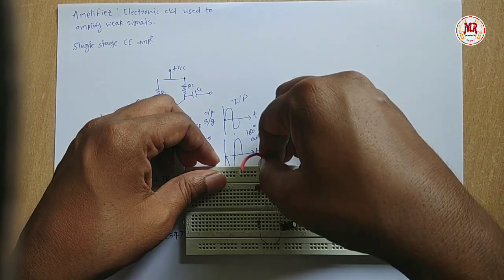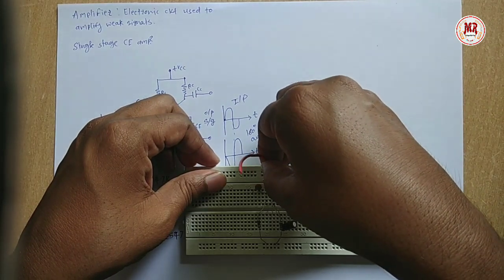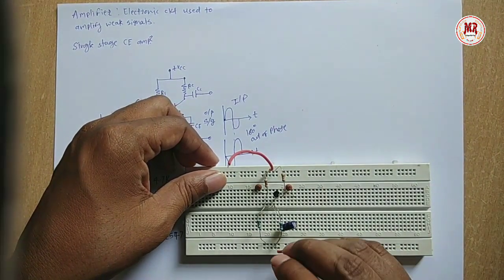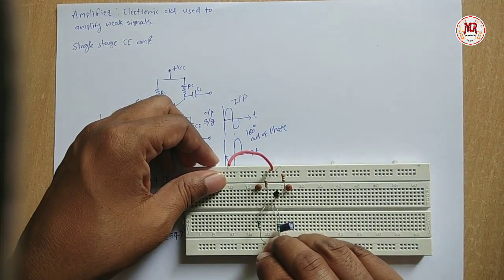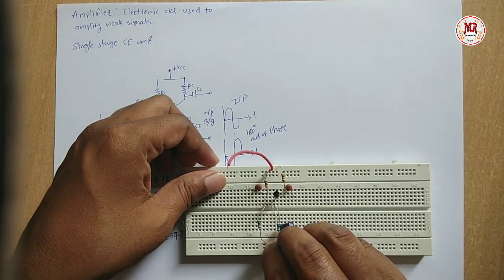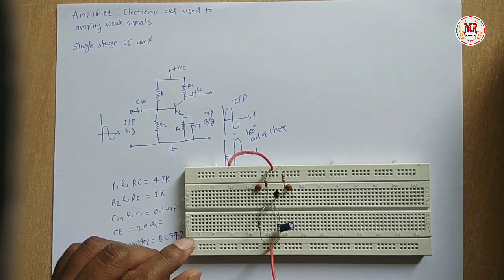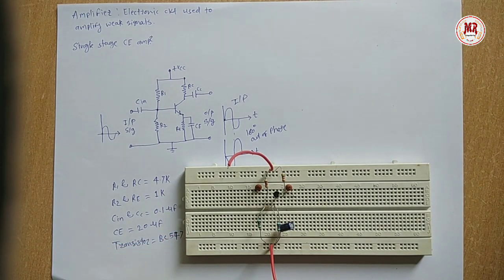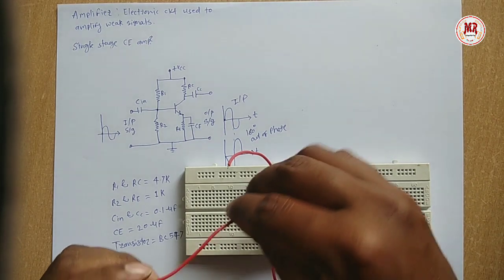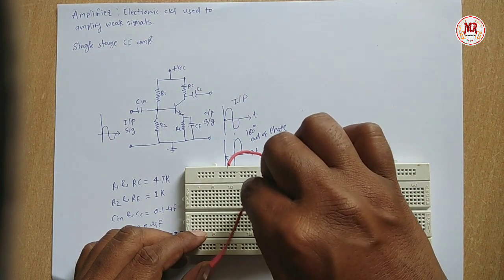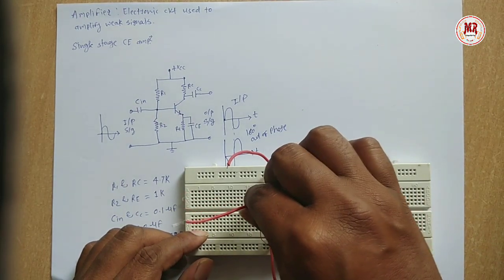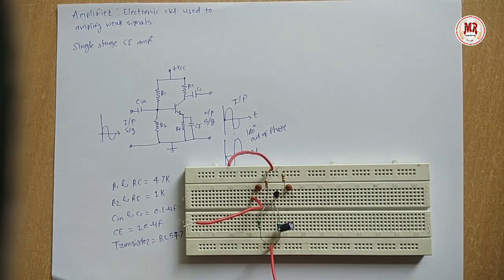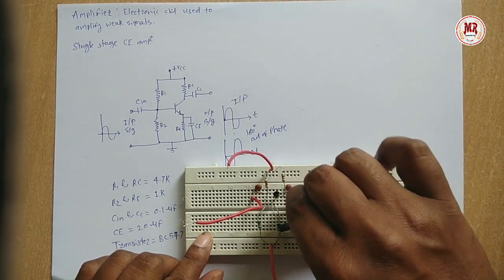Now connections for VCC, ground, input and output. This is for VCC. Now ground. Input. And output.